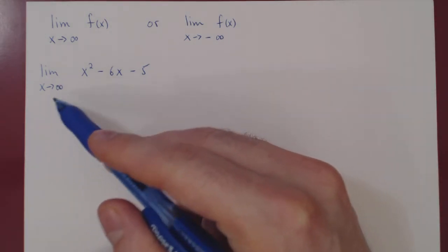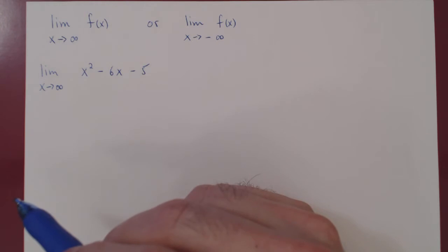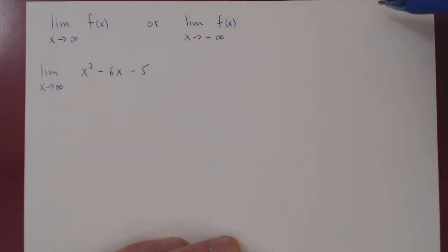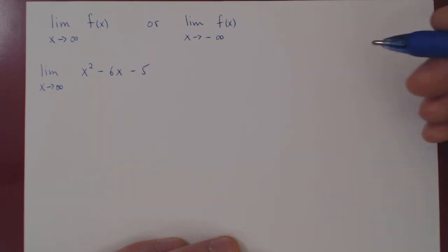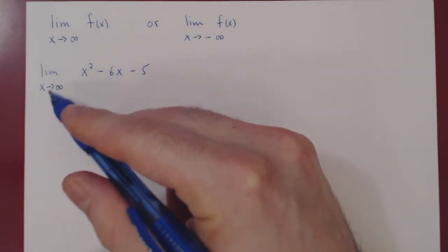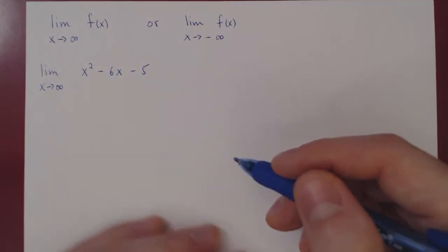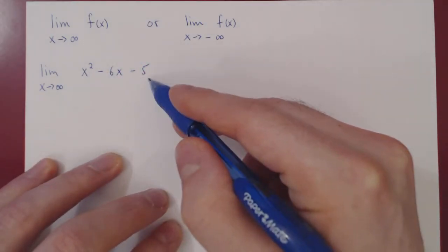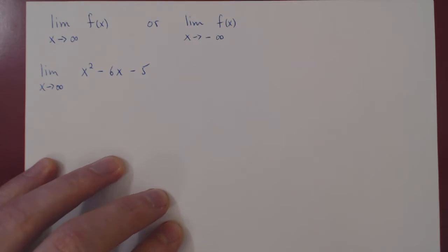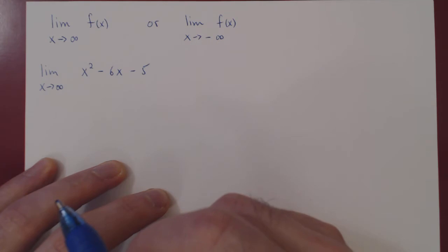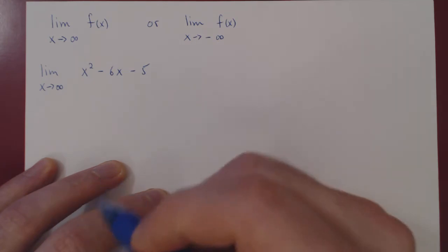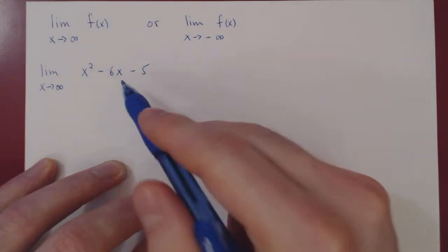This is even more obvious when x is even larger. Take x to be 100: x squared is 10,000, x cubed is 100,000, and so forth. So the larger the power when x is big, the larger the expression. Now let's look at this limit and see how, using the intuition that the dominant term is the greater power of x when x is getting larger and larger, we can easily figure out these limits.